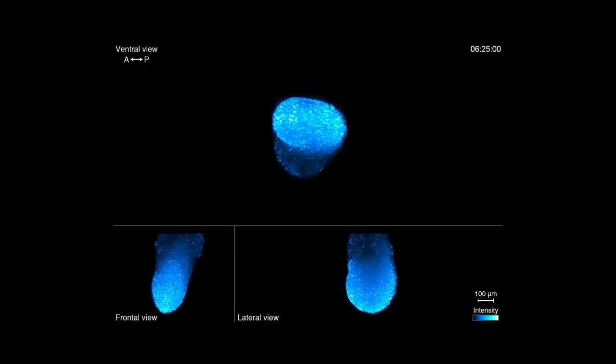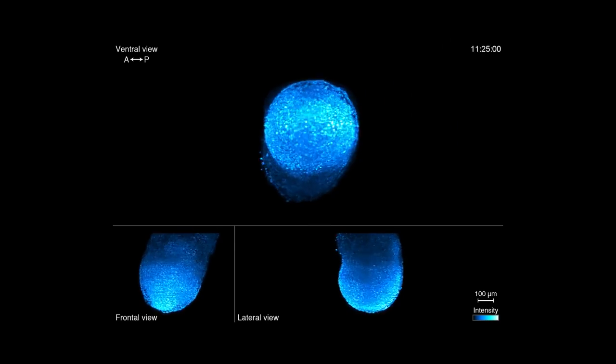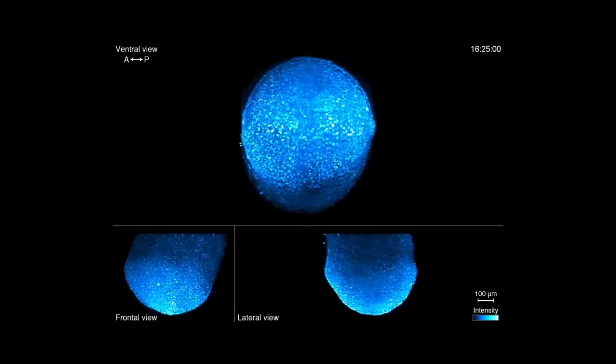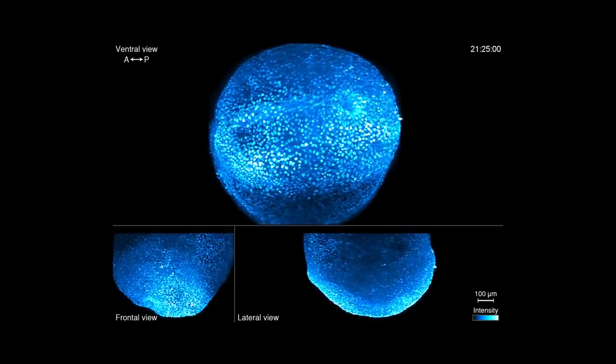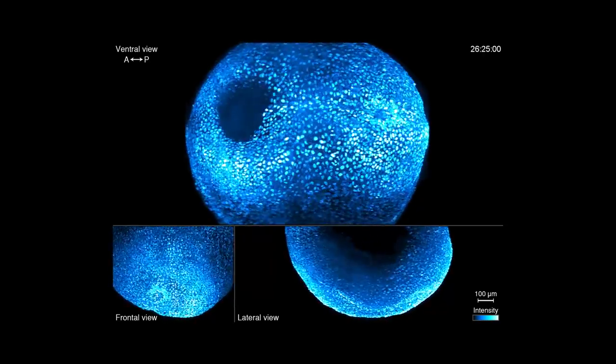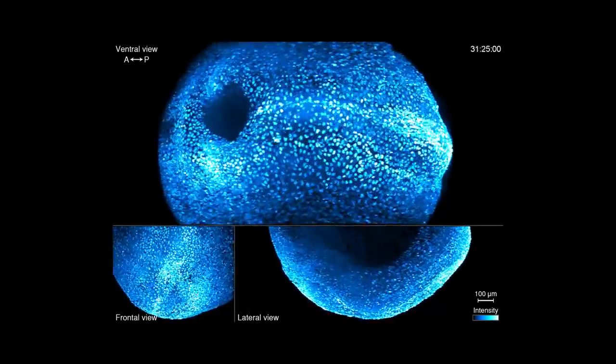With these new capabilities, we can image mouse development from the symmetry breaking event of gastrulation through organogenesis some two days later at the high spatiotemporal resolution required to track individual cell behavior.